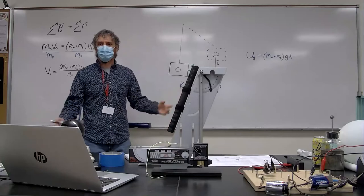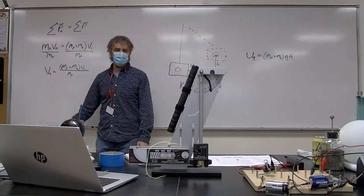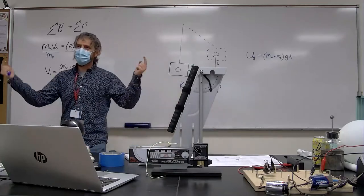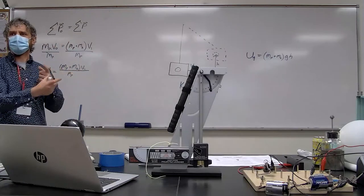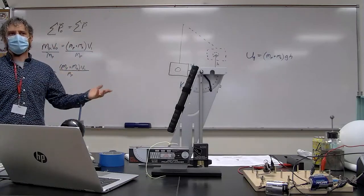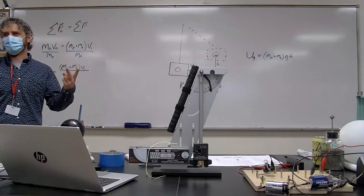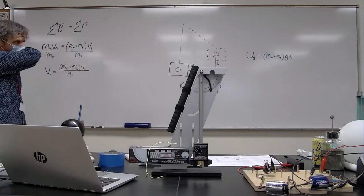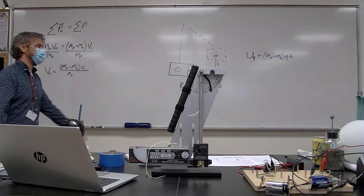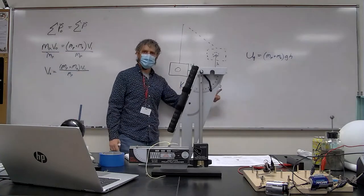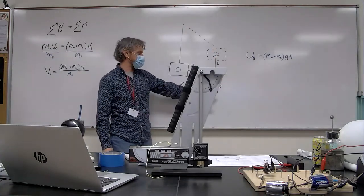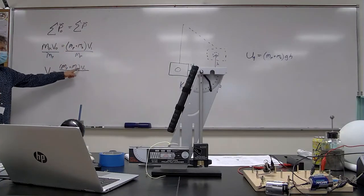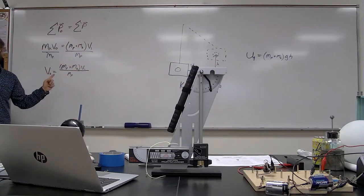My only unknowns are v₀ and v₁, but v₁ is the same in both equations. I have a system of two equations and two unknowns, so I can solve for both. Solve the energy equation for v₁, then substitute that expression into the momentum equation to calculate v₀.